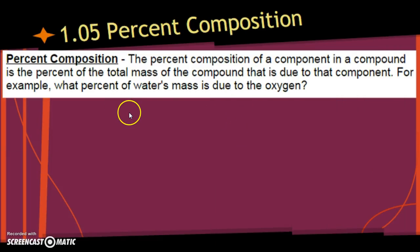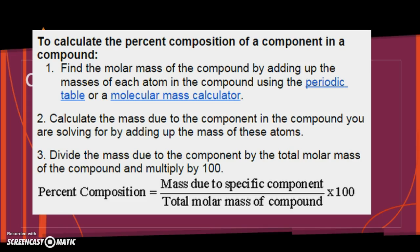So, but we're going to be looking at chemicals specifically. So, to find the percent composition of a component in a compound. In other words, if I'm looking at an entire chemical, and I just want to know what percent of the mass is oxygen, or what percent of the mass is carbon, this is what we're going to do. So, number one, find the molar mass of the compound by adding up the masses of each atom in the compound using the periodic table, or molecular mass calculator, in other words, the periodic table. Just go to the periodic table and find the masses.